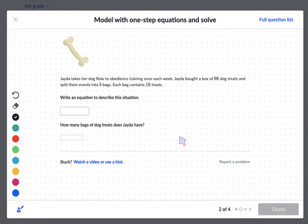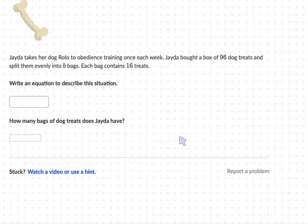Alright, here is another problem. And it says Jada takes her dog Rolo to obedience training once a week. Jada bought a box of 96 dog treats and split them evenly into B bags.